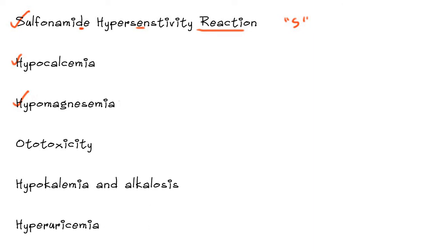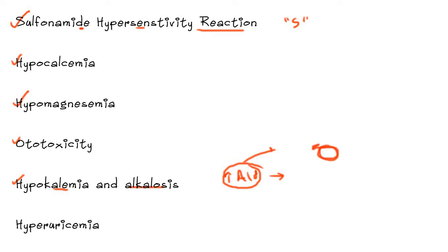Hypomagnesemia also occurs because of loss of magnesium. Ototoxicity is another side effect — since loop diuretics interact with some channels or transporters in the auditory system, they may cause ototoxicity, which is increased when aminoglycosides are administered along with loop diuretics. We also have hypokalemia and alkalosis: diuresis triggers increased aldosterone production, which stimulates pumps that secrete potassium and protons while reabsorbing sodium — causing loss of potassium and protons, resulting in hypokalemia and alkalosis.